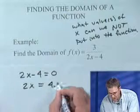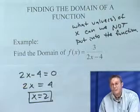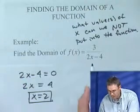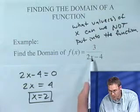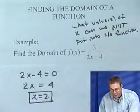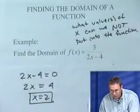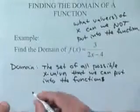So I'll just solve this little equation. Notice, if x is equal to 2, if I plug a 2 in for x, I'll get 2 times 2, which is 4. 4 minus 4 is 0, which is bad news. So the domain will be all real numbers except for 2.